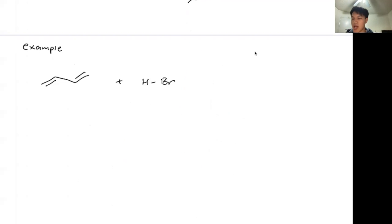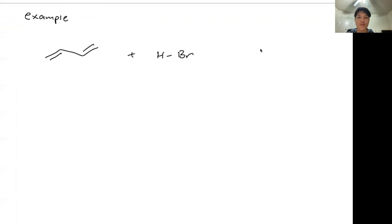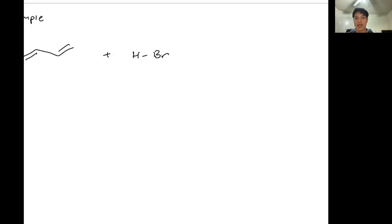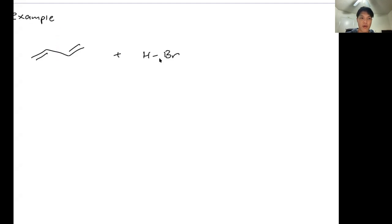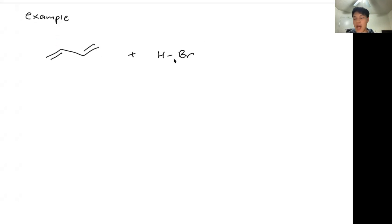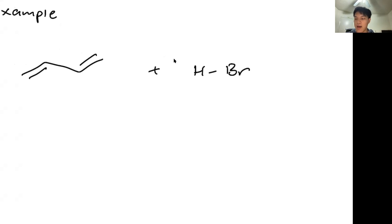Now let's do a quick example of an allylic system reacting with HBr. First of all, there is a plane of symmetry here — right down the middle — so it doesn't matter which double bond you choose to react with. The reason why we can react HBr with an alkene is that there's a very large delta-positive on this hydrogen because bromine is very electronegative.